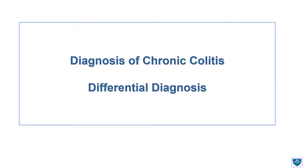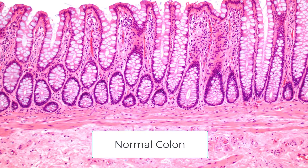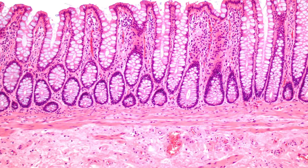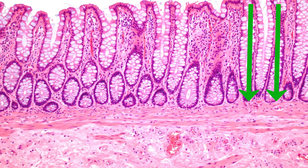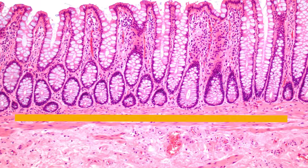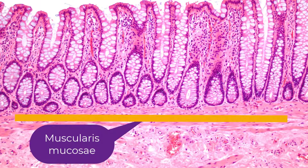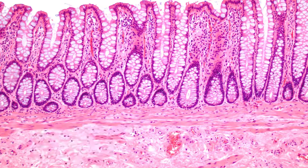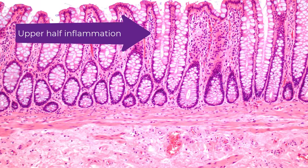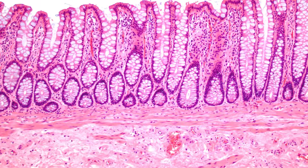But before we go there, let's look at what the normal colon looks like. I'd like to imagine the normal colon as a series of test tubes. Here's a test tube, here's a test tube. They all run in parallel, and they, in theory, should all reach the muscularis mucosae. When you see inflammation, which you do normally see, it should be in the upper half of the mucosa. The lower half of the mucosa is generally devoid of inflammatory cells.